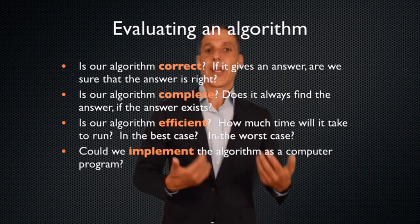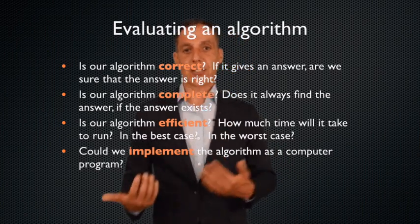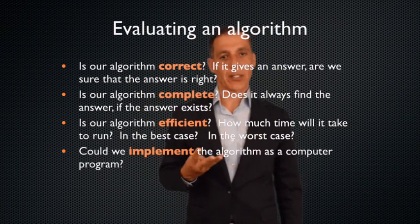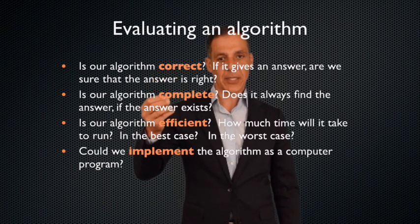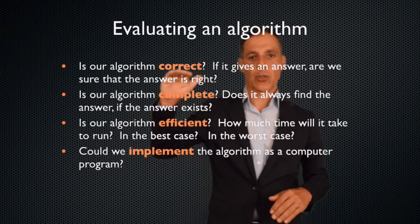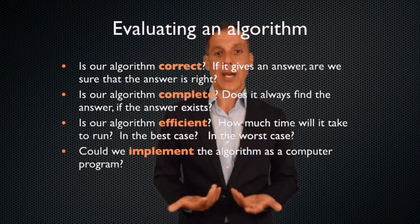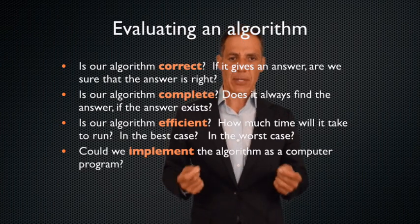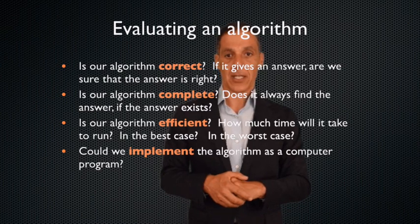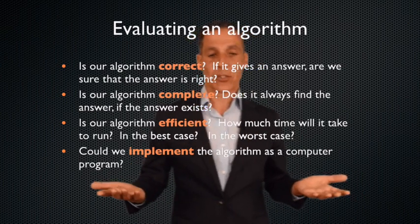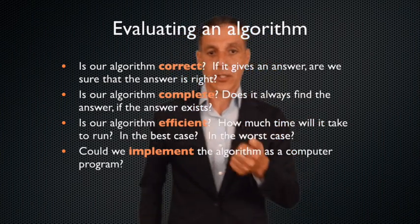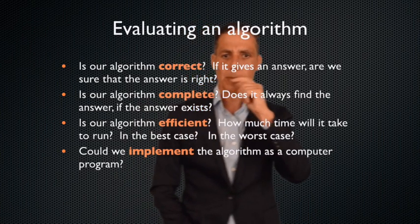Now, we're going to be writing a lot of algorithms and then translating those algorithms into actual code in Python. And there are always four things you want to think about when you're writing code. Correctness, completeness, efficiency, and implementability. So let's talk about correctness. The first thing you always want to ask yourself is, is your algorithm correct? I mean that if your algorithm gives an answer, so in the case of counting, a number comes up at the end, are we sure it's right? Is that the correct answer? That seems like a bare minimum you would want from your algorithm or your program.